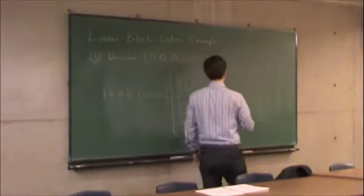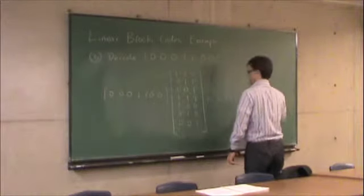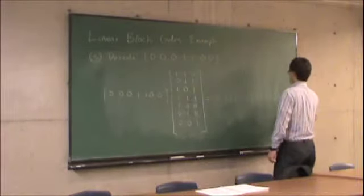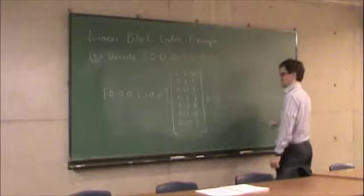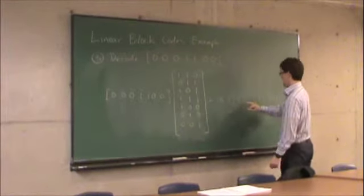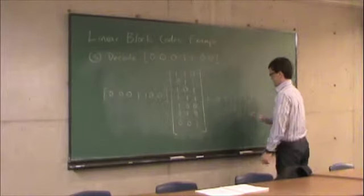So basically, this is equal to one, one, one, plus one, zero, zero, mod two, which is equal to one plus one is two, mod two is zero, and in these two cases, one plus zero is one. So there's my syndrome.